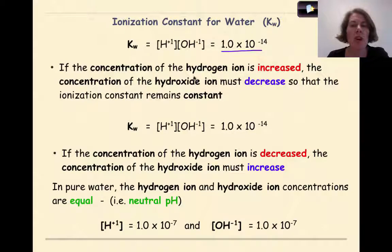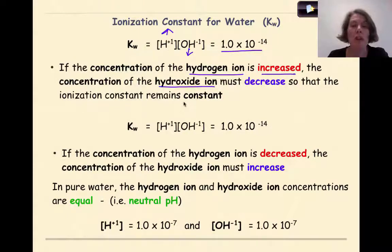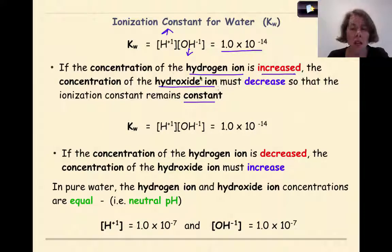If the concentration of the hydrogen ion is increased, the concentration of the hydroxide ion must decrease, so that the ionization constant remains constant. Remember, hydrogen ions are associated with acids and hydroxide ions are associated with bases. So if we increase the hydrogen ion concentration and decrease the hydroxide, our solution is going to become more acidic.